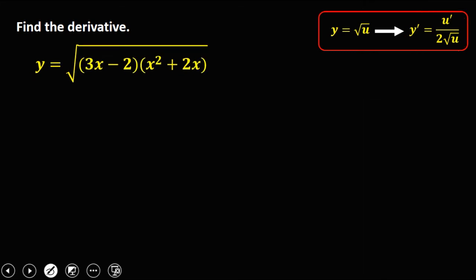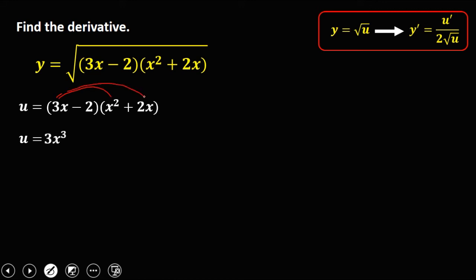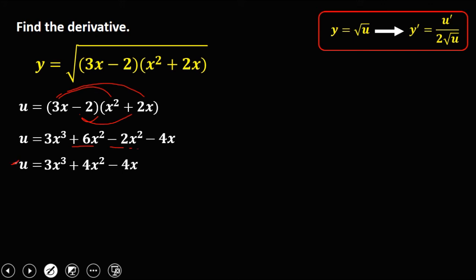Then for this given: u equals (3x minus 2) times (x squared plus 2x). Simplify this equation using the distributive property. So 3x times x squared is 3x to the power 3; 3x times 2x is 6x squared; negative 2 times x squared is negative 2x squared; and negative 2 times 2x is negative 4x. Then simplify by combining like terms: we have 3x to the power 3, then 6x squared minus 2x squared is positive 4x squared, then minus 4x. So this is now your u.